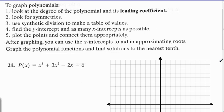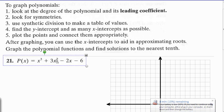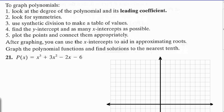For number 21, we are going to graph the polynomial. We're going to do that by first factoring, if possible, and finding the x-intercepts.